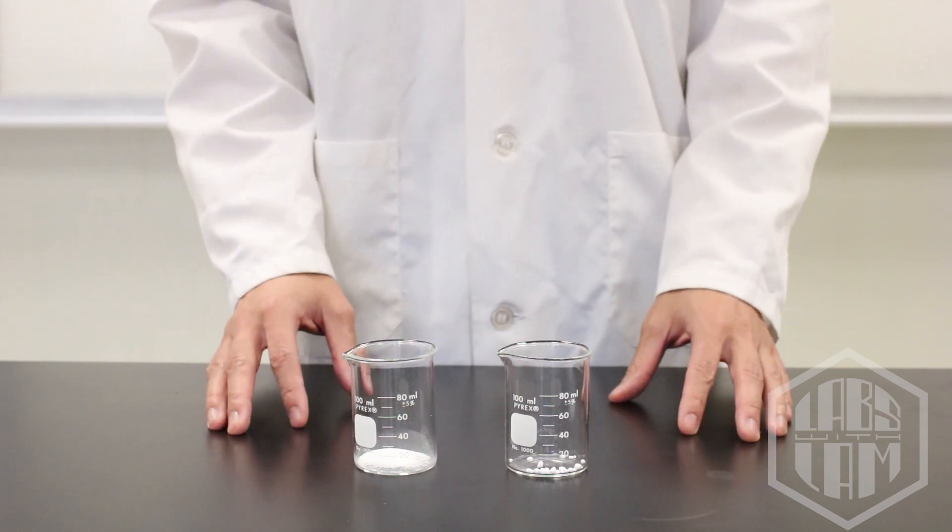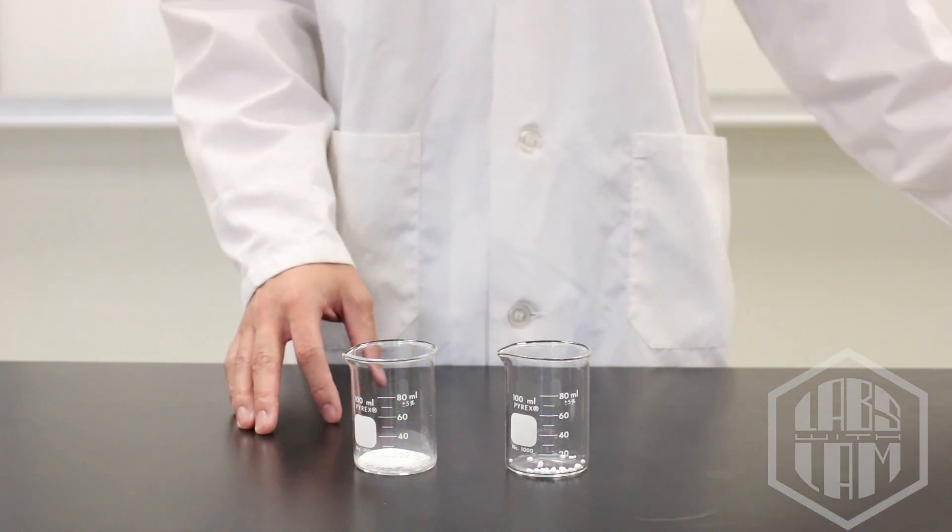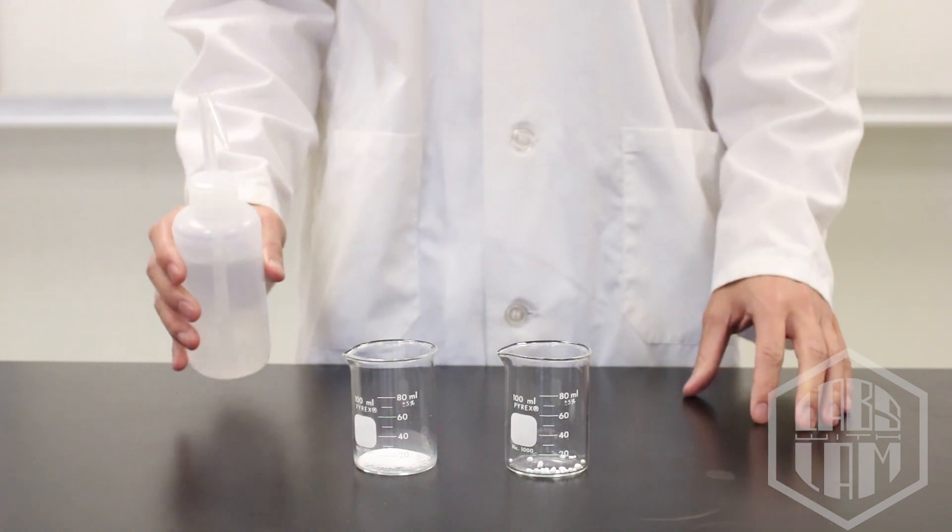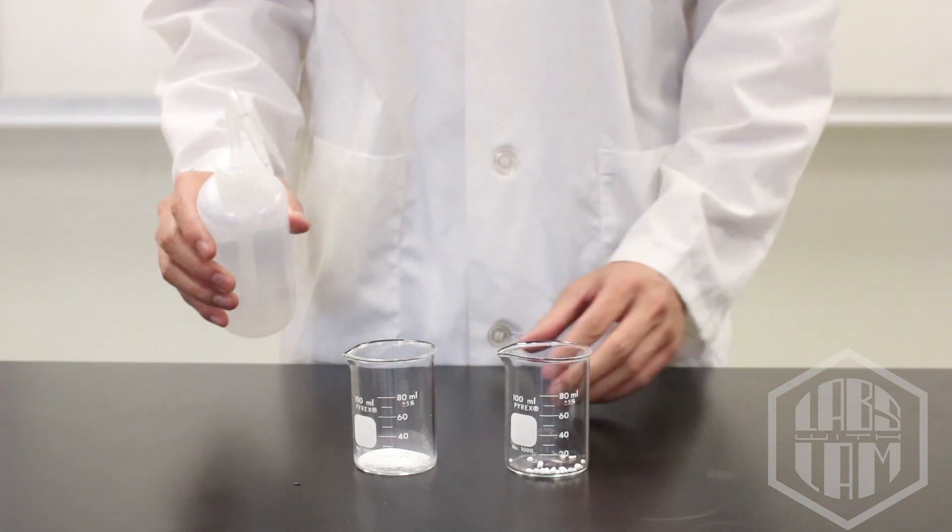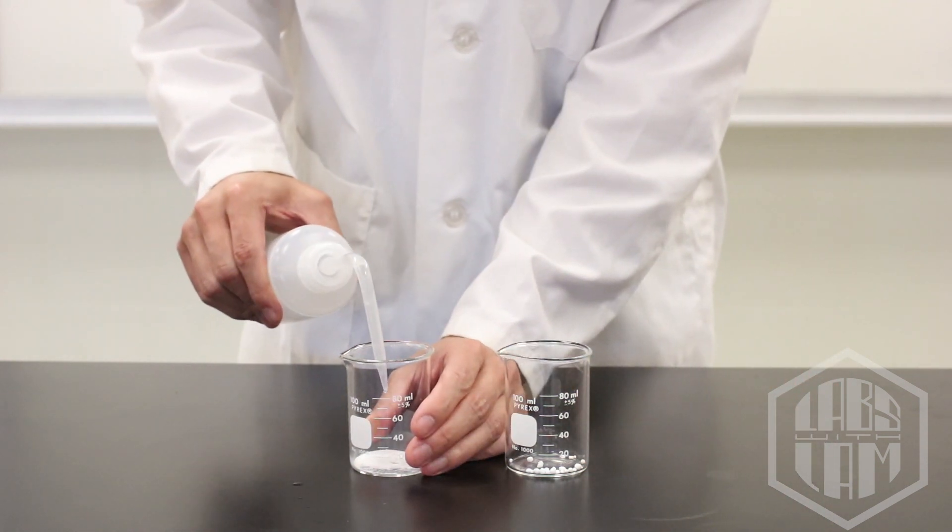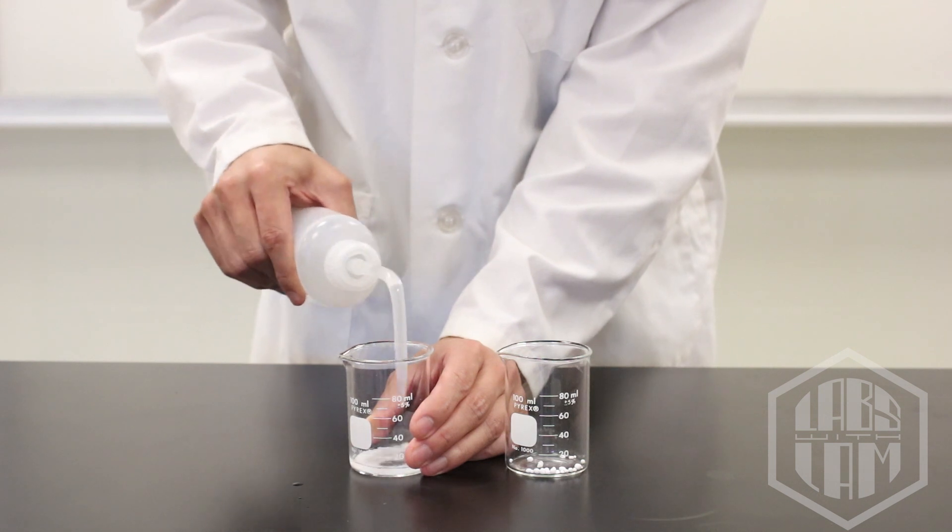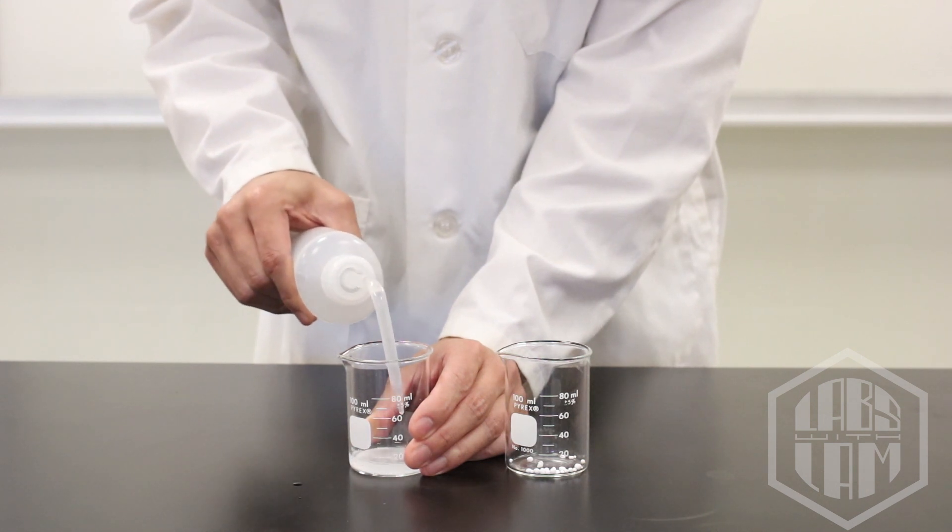Now that we have both of our chemicals measured out, we can dissolve them in water. I'm using a wash bottle to add water because it helps me keep the sodium carbonate from clumping together and it speeds up the dissolving process. Still, this usually takes a while, so I'll fast-forward through most of it.